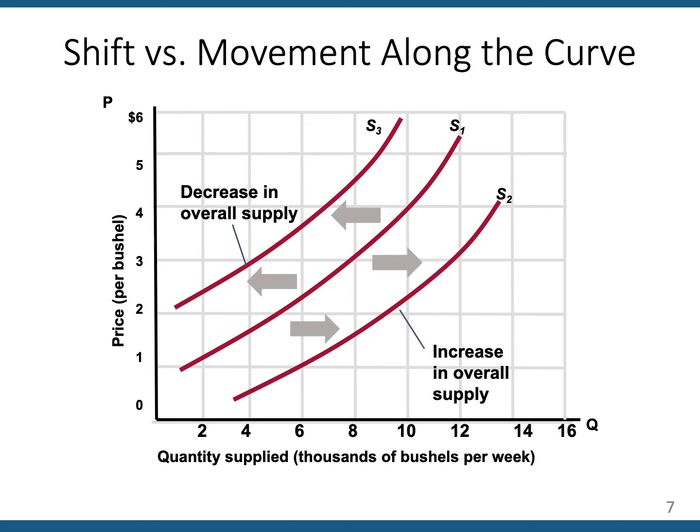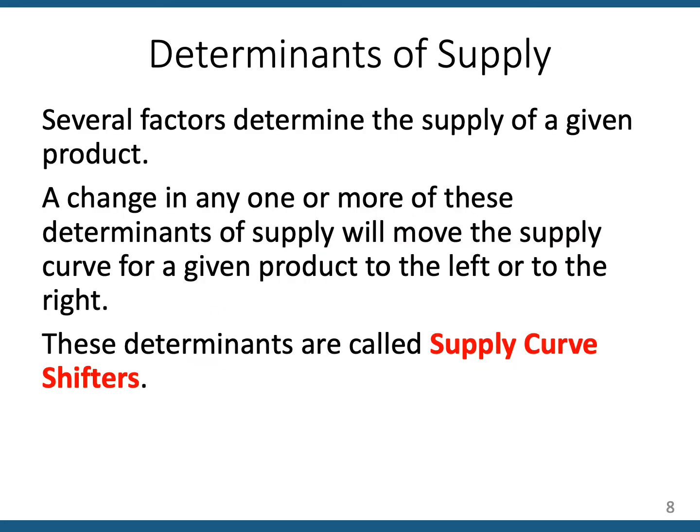If something other than the price changes that impacts supply, then we say there's a change to overall supply. If the curve is shifting to the right, that represents an increase in overall supply. If the curve is shifting to the left, that represents a decrease in overall supply. What are these supply curve shifters? Sometimes they're called the determinants of supply. There are going to be five of those, just like there were five demand curve shifters.